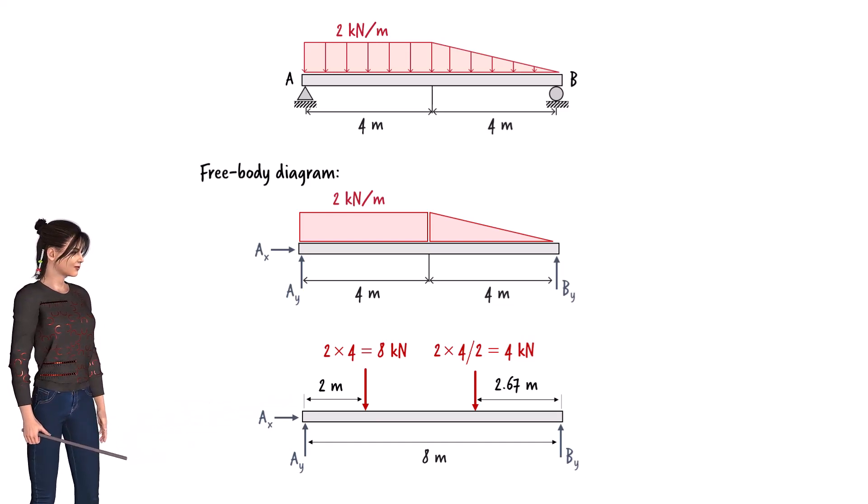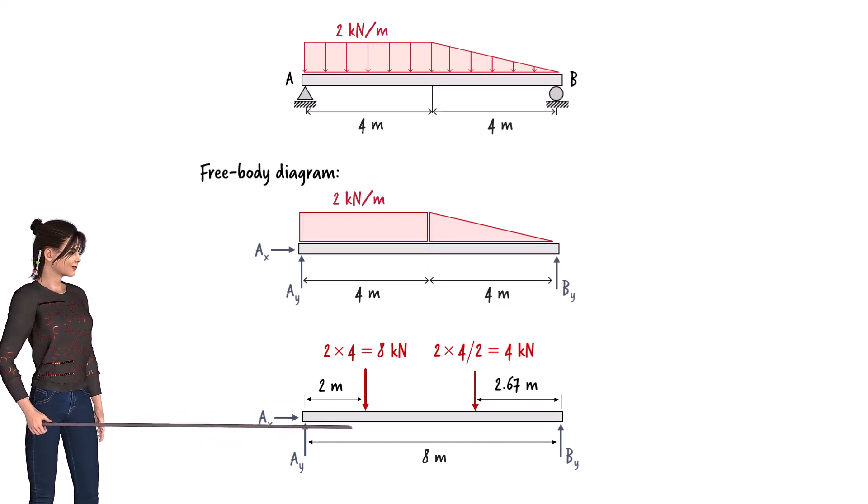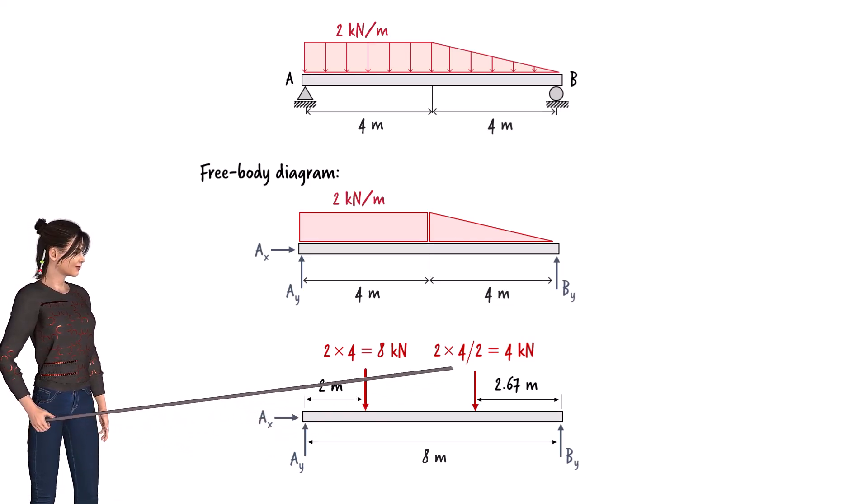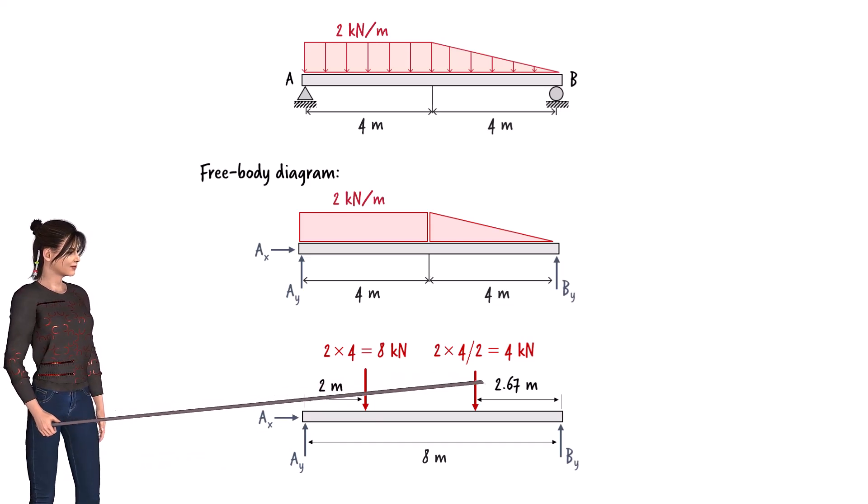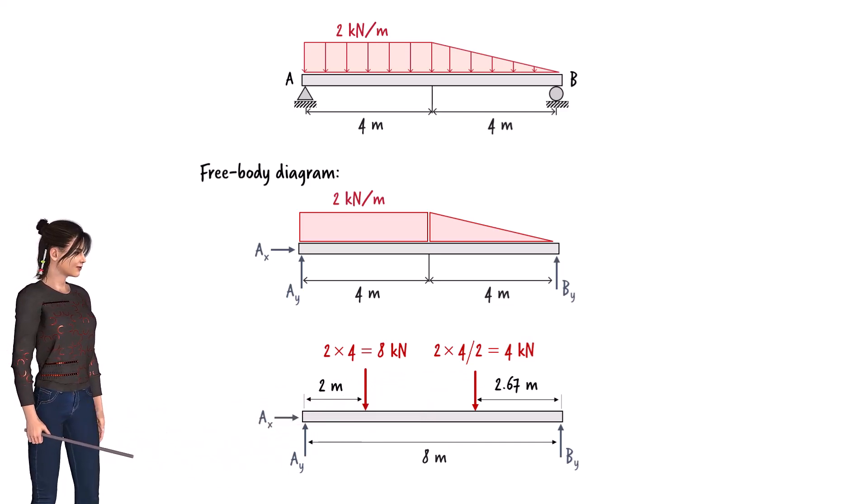Since the area of the triangle is 4, we can replace the area with a point load having a magnitude of 4 kN. The center of the triangle is 2.67 m to the left of point B. So that is where the point load must be placed.